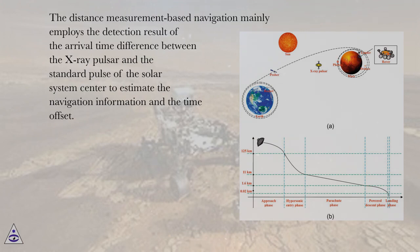The distance-measurement-based navigation mainly employs the detection result of the arrival time difference between the x-ray pulsar and the standard pulse of the solar system center to estimate the navigation information and the time offset.